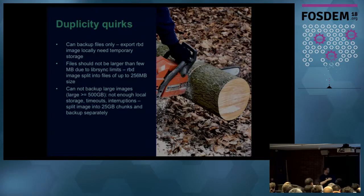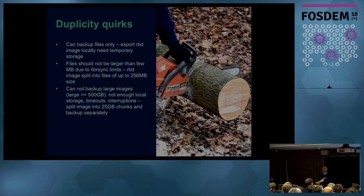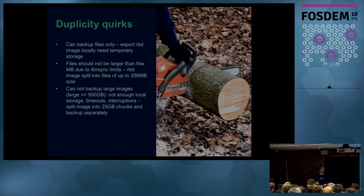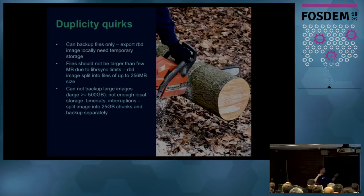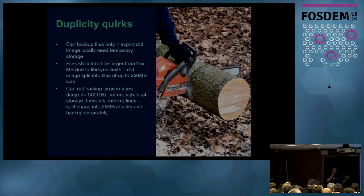We also had problems with Duplicity not tolerating large files. Beyond a few hundred megabytes, the rsync algorithm used inside Duplicity starts having serious performance issues — CPUs peg at 100% and you wait hours for a backup. Our colleagues at OVH said you need to chop files into smaller pieces, and that's what we started doing.